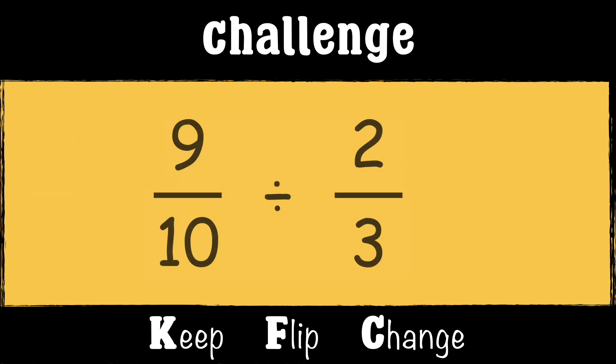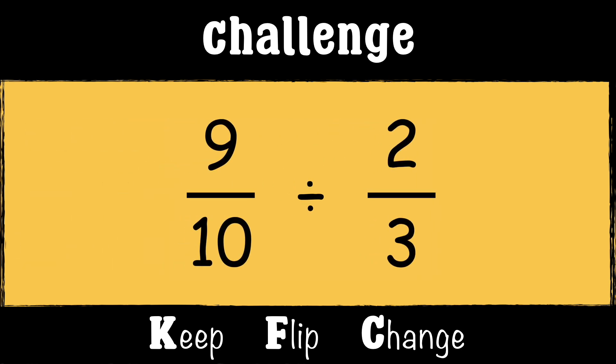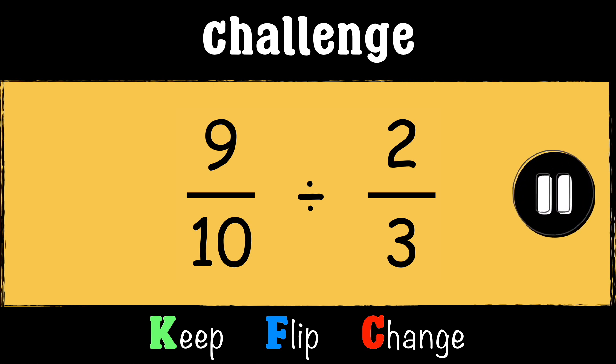Now it's your turn: nine-tenths divided by two-thirds. Use the Keep, Flip, and Change method to work the answer out. Pause the video and let me know your answers in the comments section.